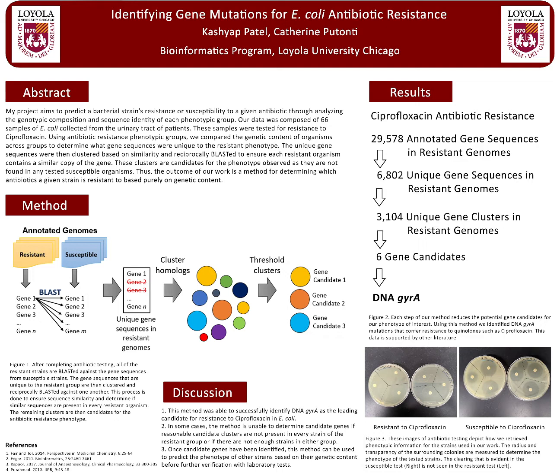In Figure 2, for ciprofloxacin antibiotic resistance, you can see that each step of our method reduces the potential gene candidates for our phenotype of interest, antibiotic resistance. Using this method, we have identified DNA gyrase A mutations that confer resistance to quinolones, such as ciprofloxacin. This data has been supported by other literature.